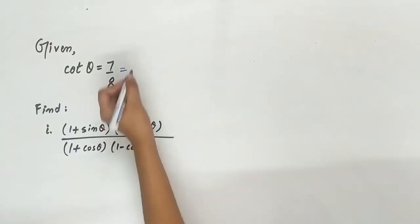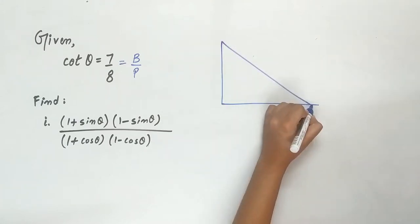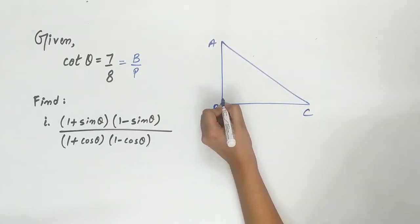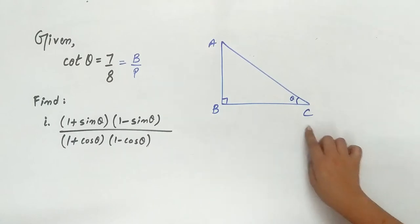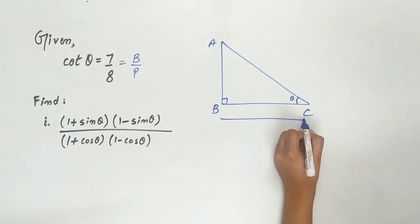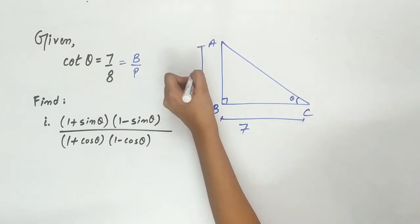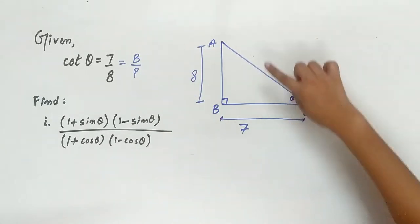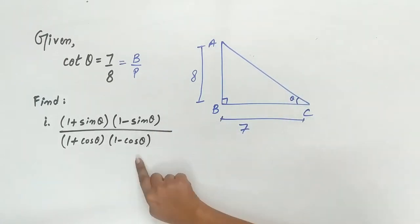Cot theta is based upon perpendicular. Let ABC be a right-angled triangle. Let angle C be equal to theta. Base is 7, perpendicular is 8. Use Pythagoras theorem to find hypotenuse so that we can find sin theta and cos theta.